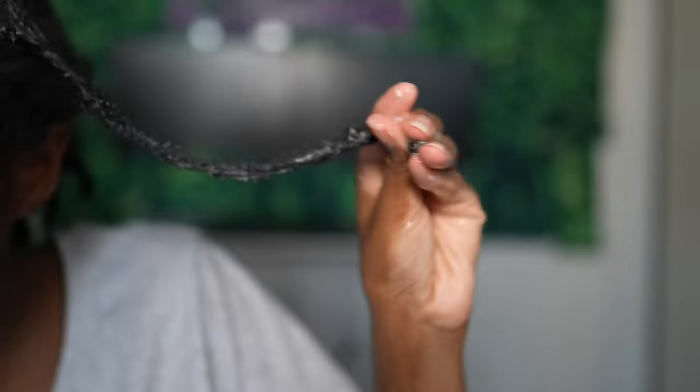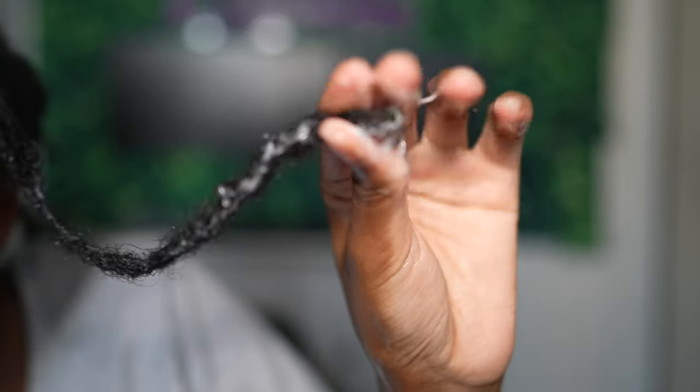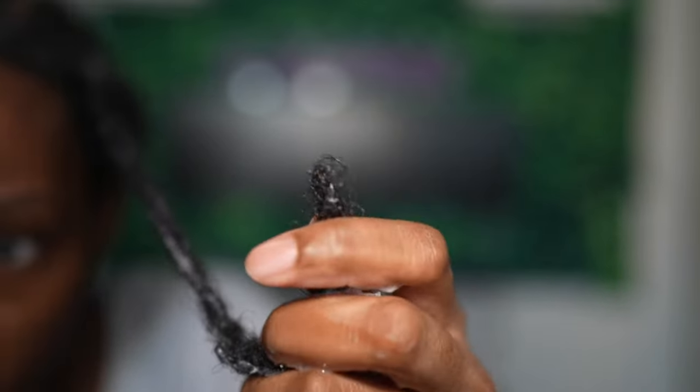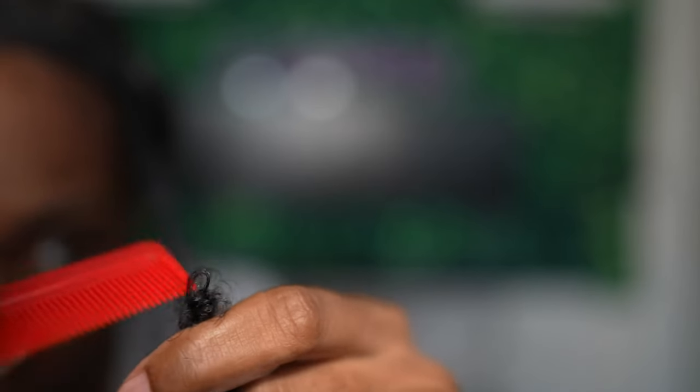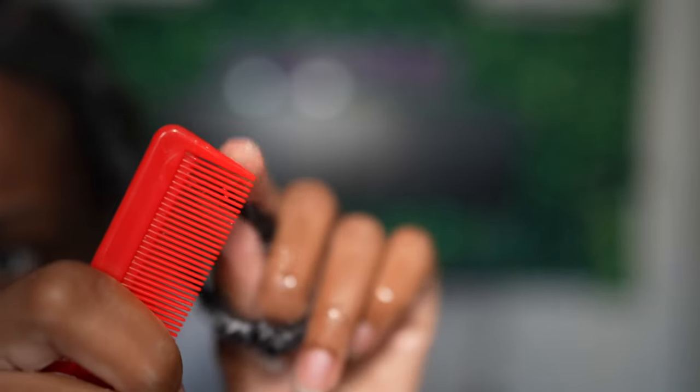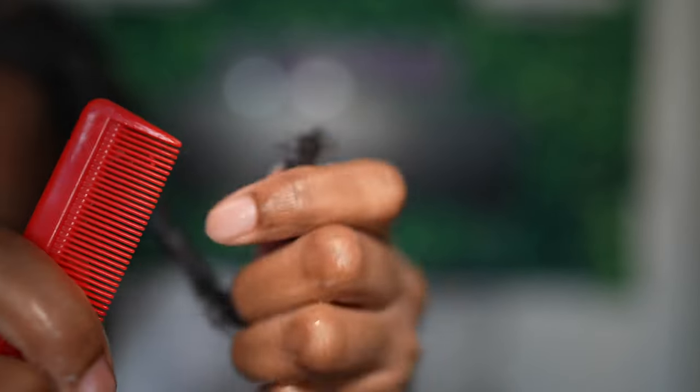Then you want to spray it with some more water. If you ever feel like the lock is getting dry, spray water first before putting on the conditioner because the water is the moisture. Here, I'm starting with the very tip of the comb and working it through the end of my lock.